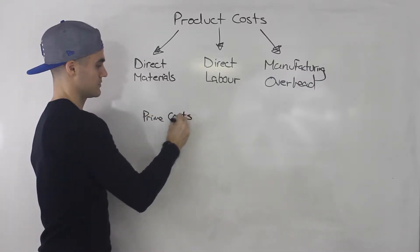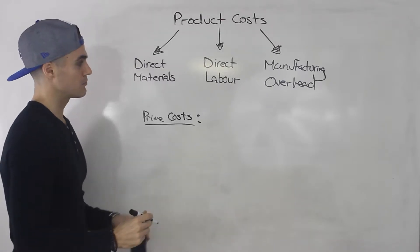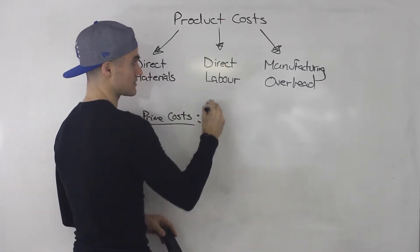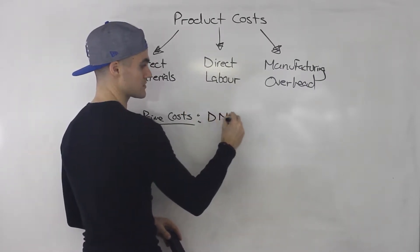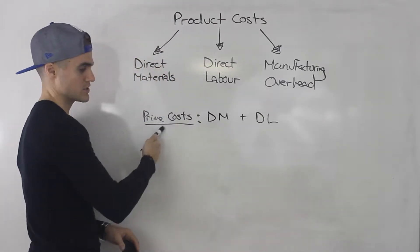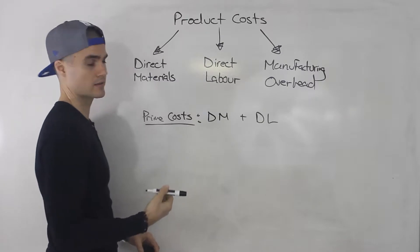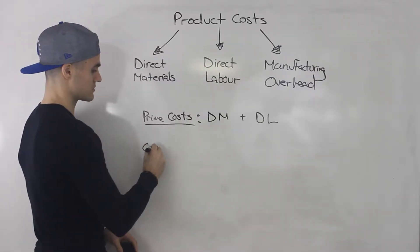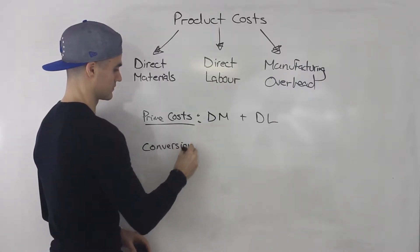Something you may see come up is something called prime costs. Prime costs are basically the direct costs in the product costs — so it's direct materials plus direct labor. If a question is asking about prime costs, take the direct materials, add the direct labor, and those are your total prime costs.